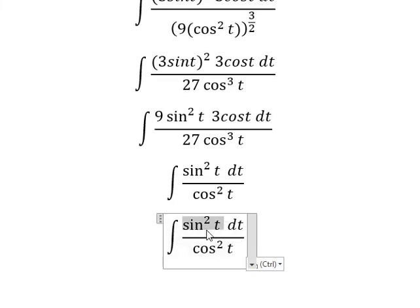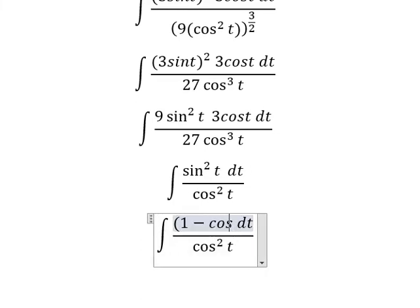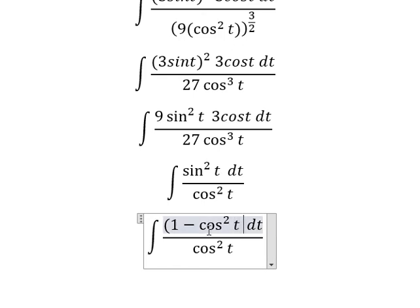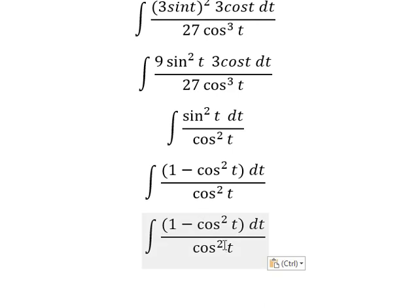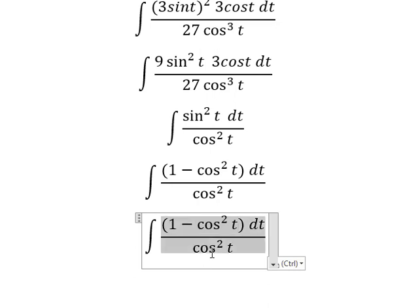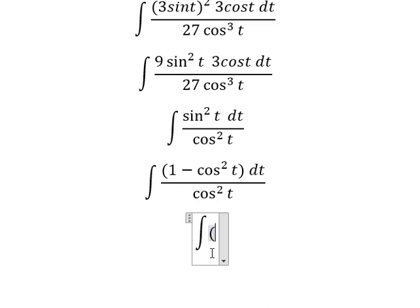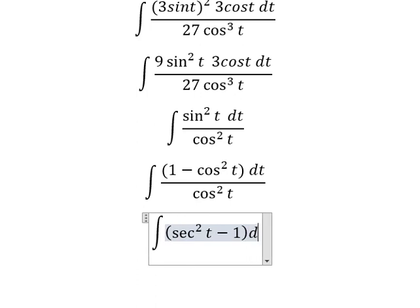For sin²(t) we can substitute using the trigonometric identity: sin²(t) equals 1 minus cos²(t). So we have 1 divided by cos²(t) and cos²(t) divided by cos²(t), which gives us sec²(t) minus 1 dt.